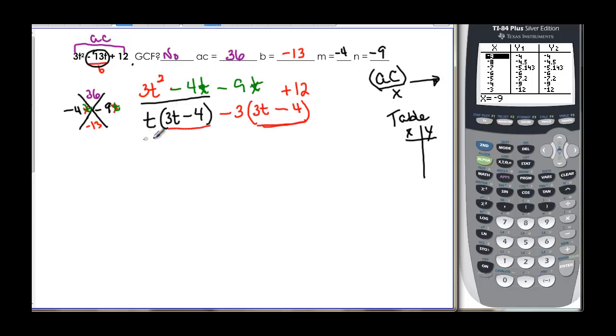And now I can see that these two things are the same. So when I do my factoring of my first two terms and my last two terms, that's my greatest common factor. And my other factor would be the t on the outside and the negative 3 on the outside that make up my second factor.